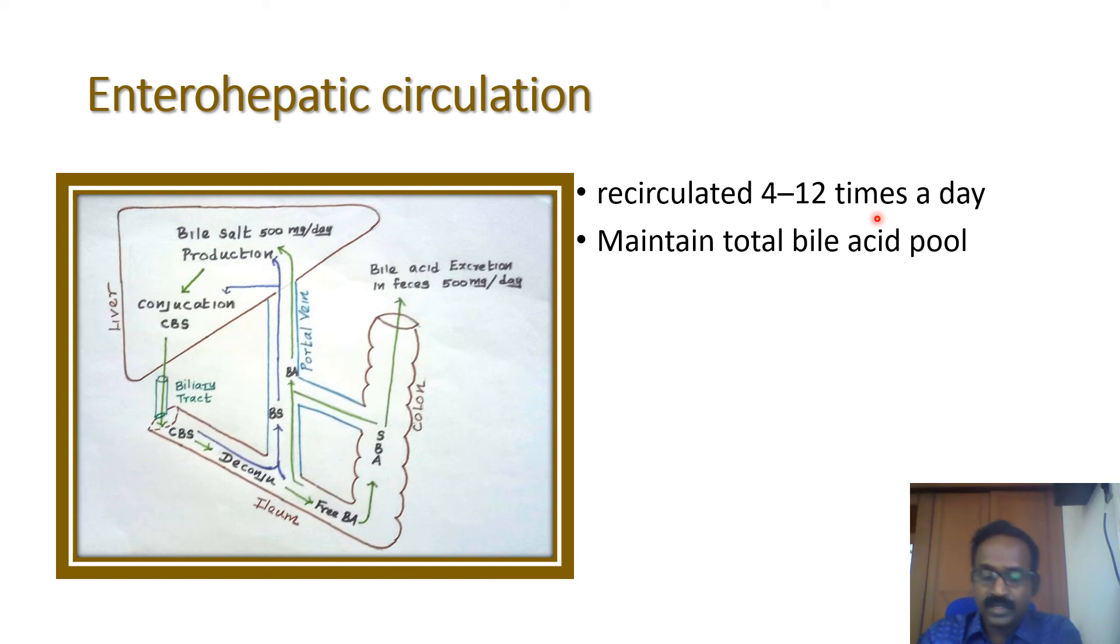The enterohepatic circulation is dependent on the integrity of the intestinal epithelium, because the intestinal epithelium is important for the reabsorption of bile salts through the portal circulation. Intestinal bacteria are important for the conversion of primary bile salts into secondary bile salts.